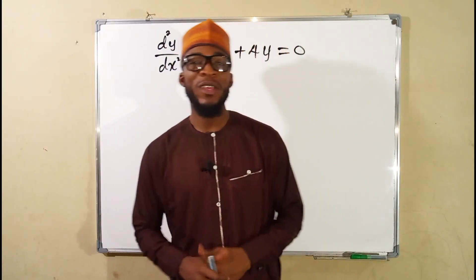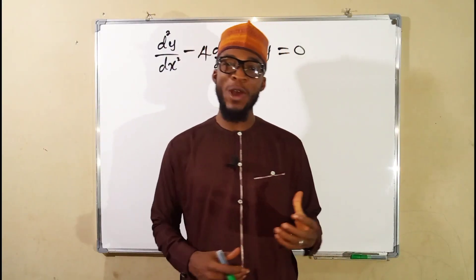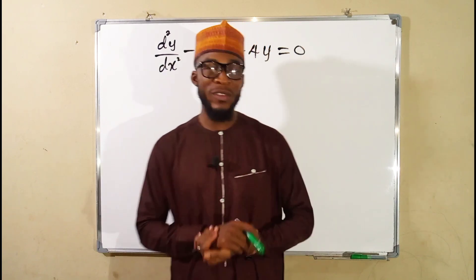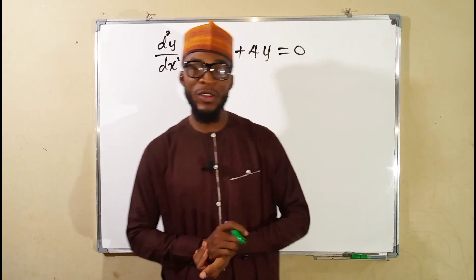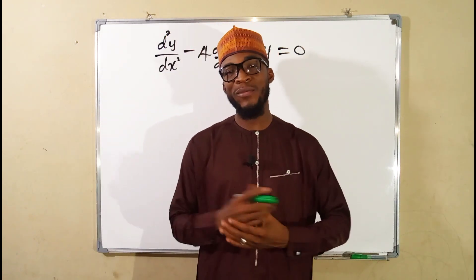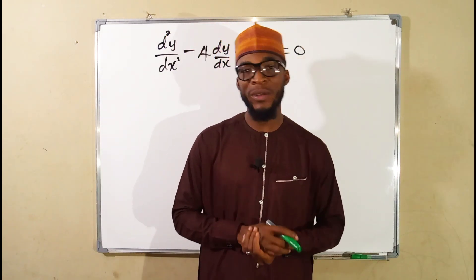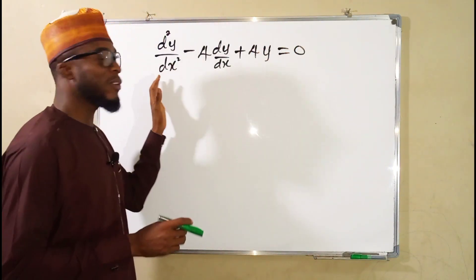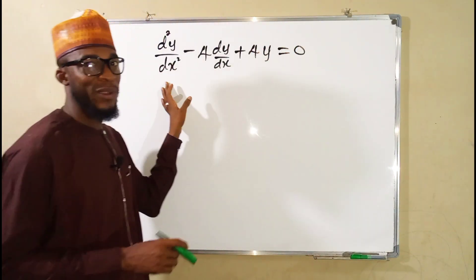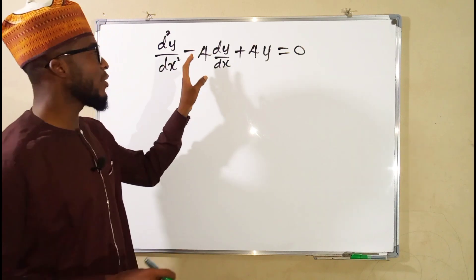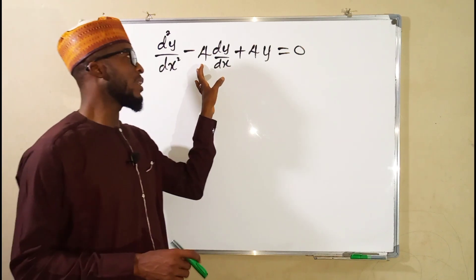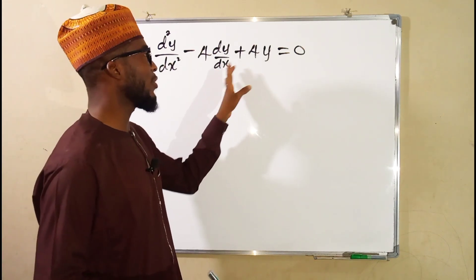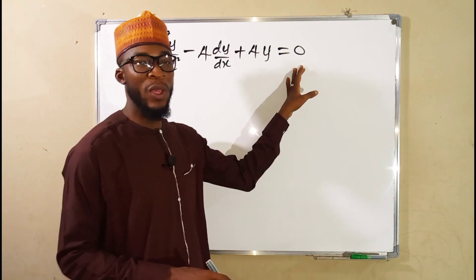Hello, good morning viewers. Still on to how to solve second-order linear homogeneous differential equations. I have another problem for us to solve. Suppose we are given the second derivative of y with respect to x, minus 4 times the first derivative of y with respect to x, plus 4y equals 0.